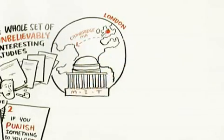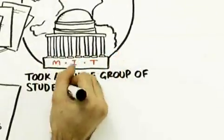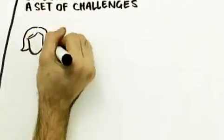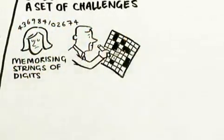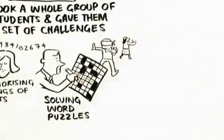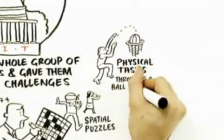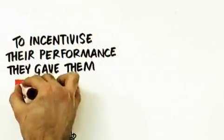Let's talk about a study done at MIT, Massachusetts Institute of Technology. Here's what they did: they took a whole group of students and gave them a set of challenges - things like memorizing strings of digits, solving word puzzles, other kinds of spatial puzzles, even physical tasks like throwing a ball through a hoop.